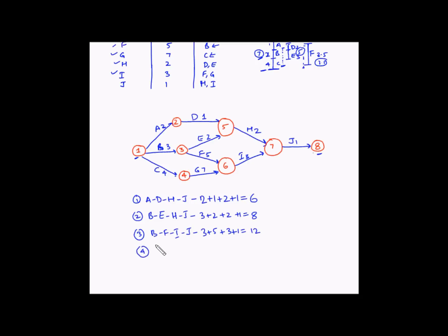The fourth path starts with C. Path C-G-I-J has durations 4 plus 7 plus 3 plus 1. So 4 plus 7 is 11, plus 3 is 14, plus 1 is 15 days.